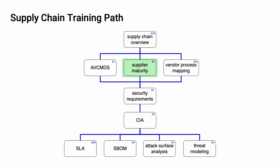This training covers the supplier self-reported cybersecurity maturity documentation. Additional trainings will cover manufacturer disclosure statement, AVCMDS, vendor cybersecurity process to AVCDL mapping, cybersecurity requirements, tailoring the cybersecurity interface agreement, service level agreements (SLAs), software bill of materials (SBOMs), attack surface analysis, and threat modeling.